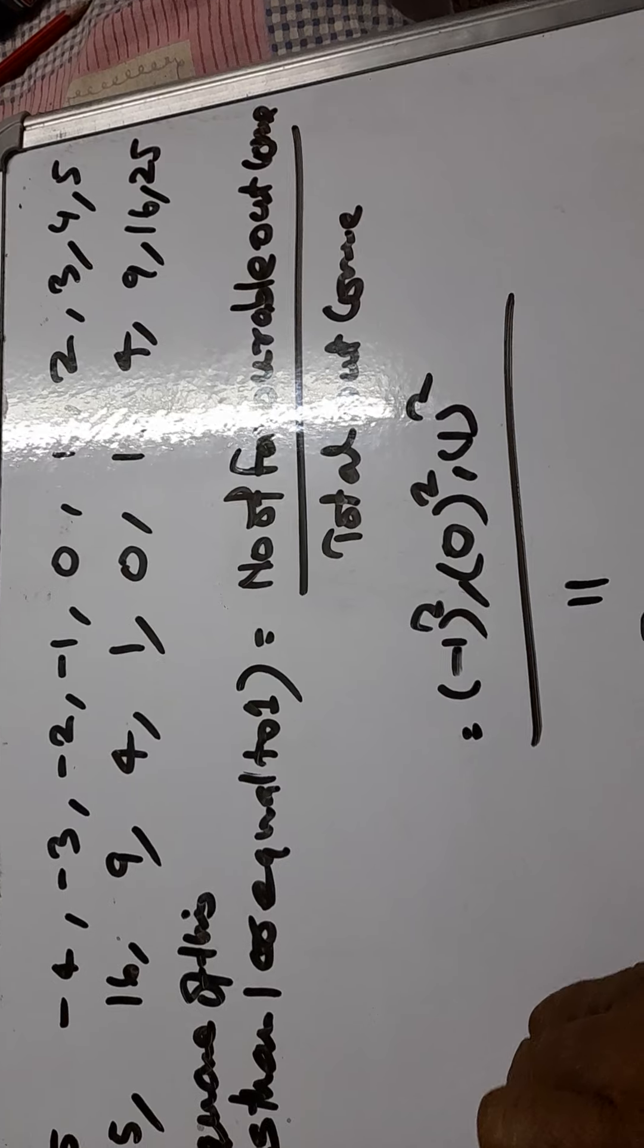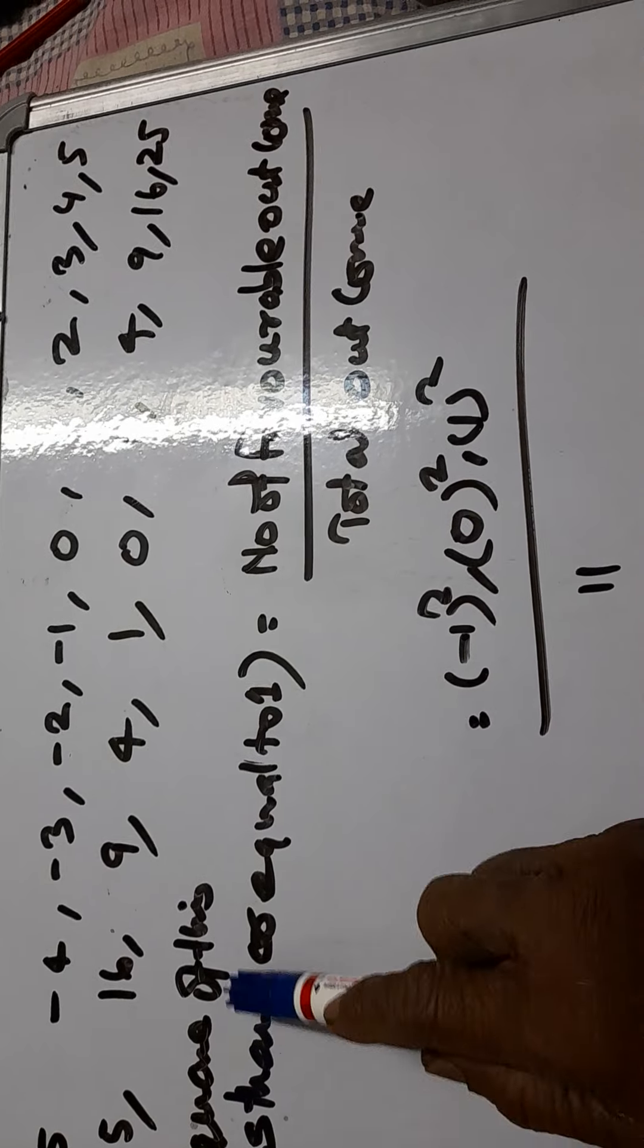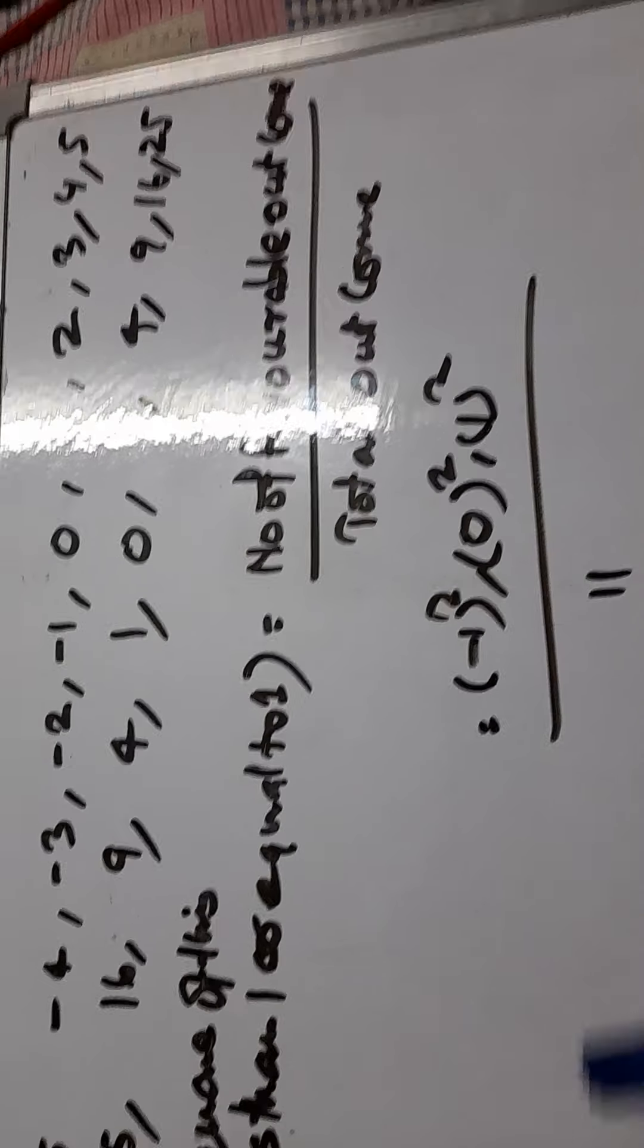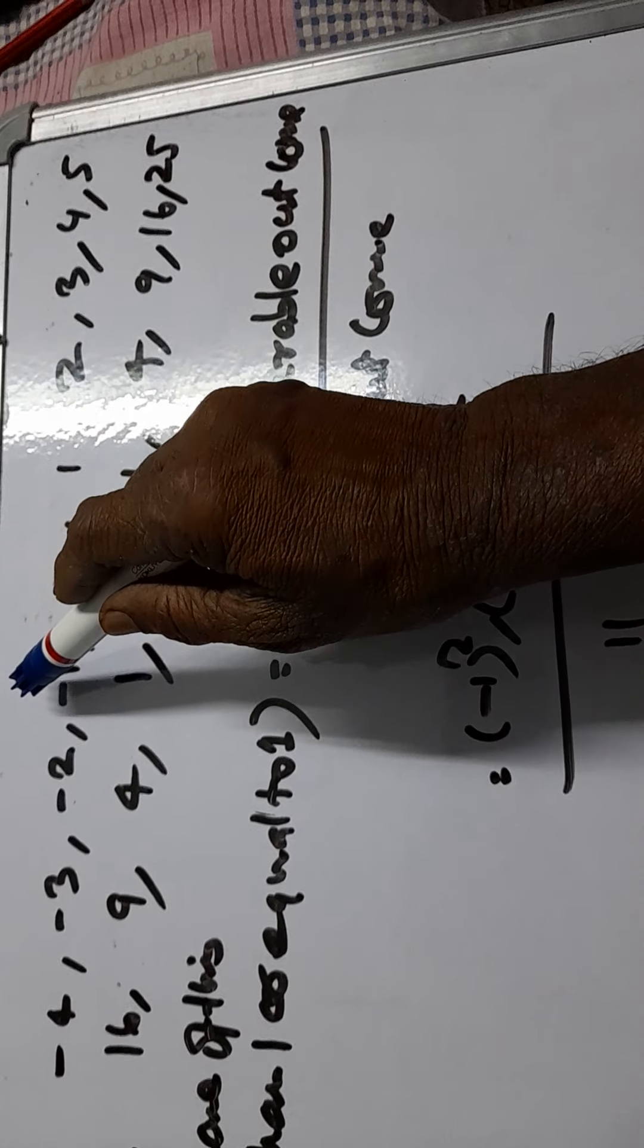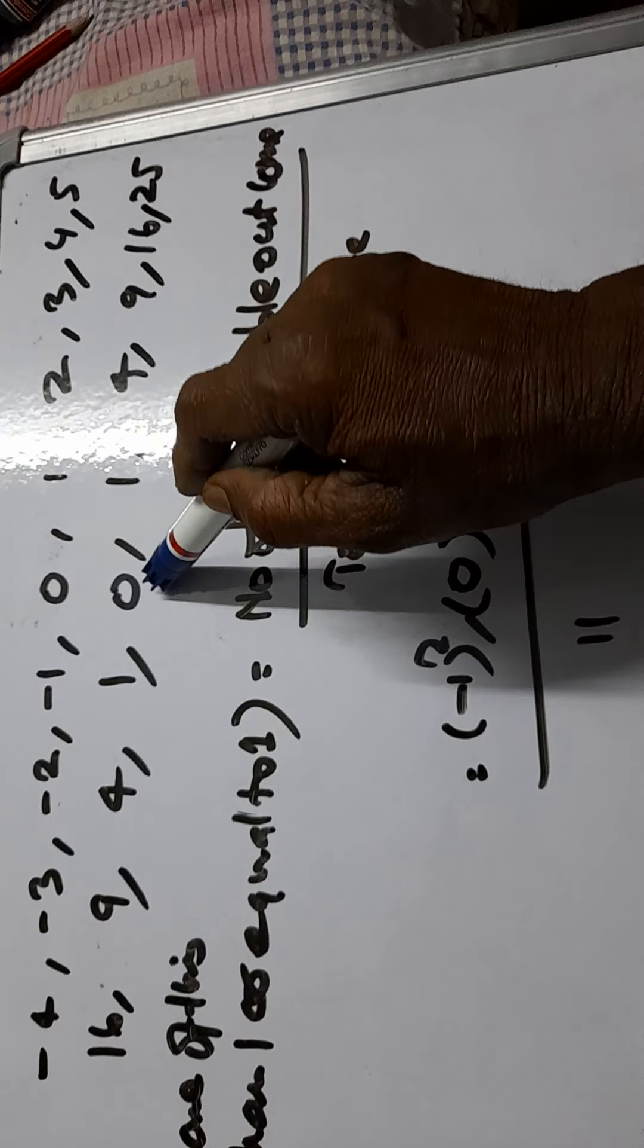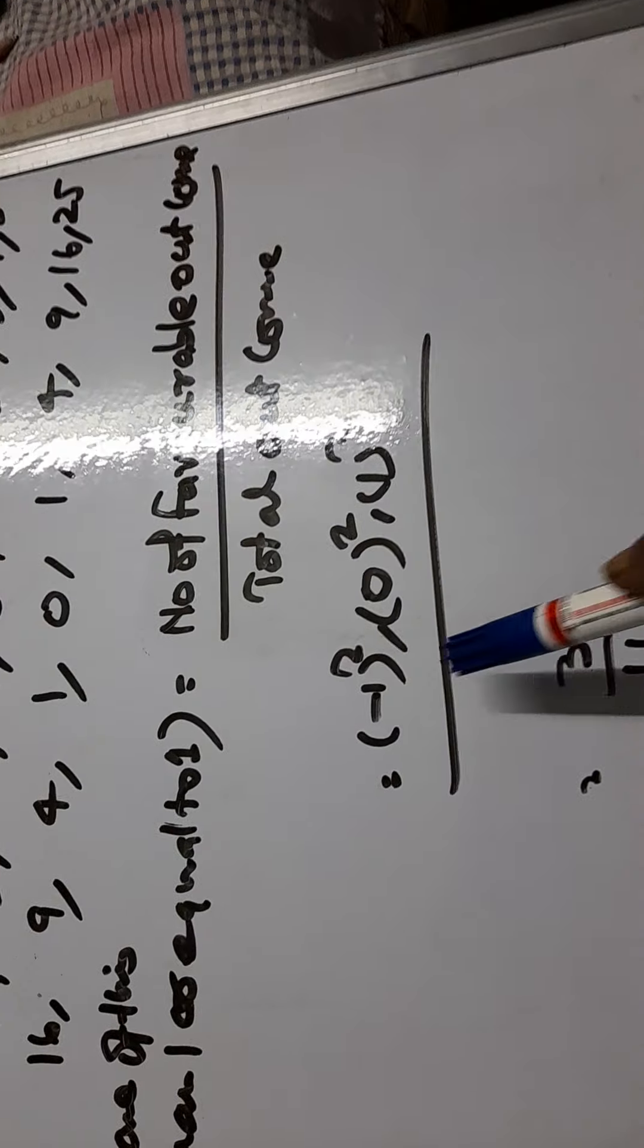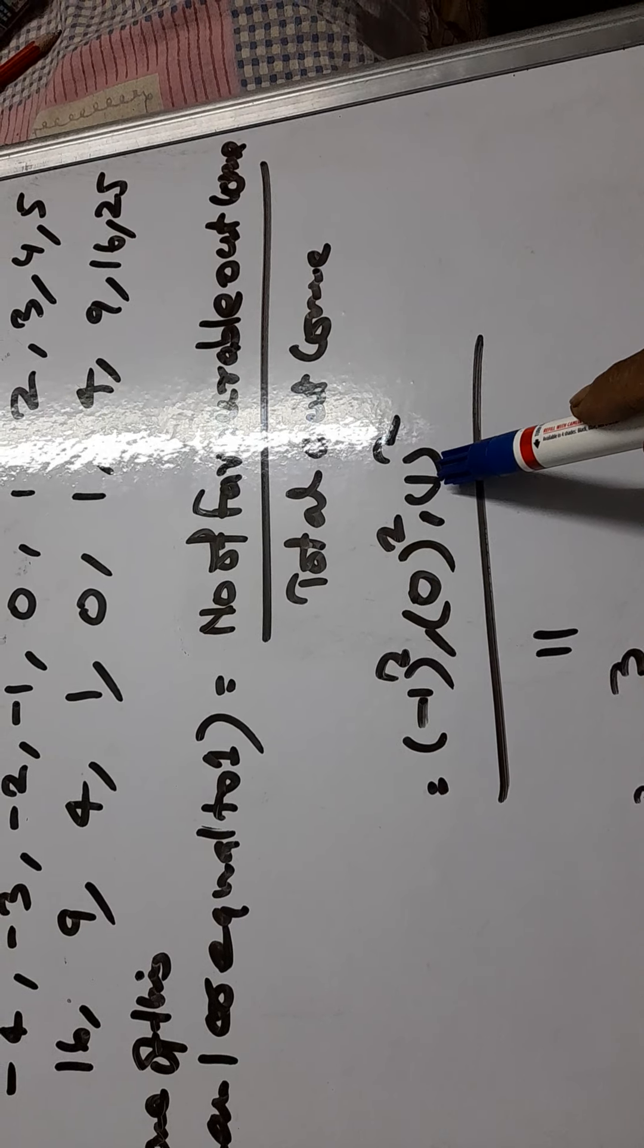We have to find the probability that square of this is less than 1 or equal to 1. So if minus 1, the favorable outcome is minus 1 squared is 1, 0 squared is 0 and 1 squared is 1. So favorable outcome is only minus 1, 0 and 1.